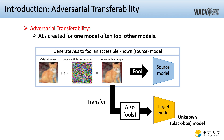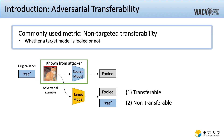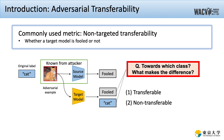AEs have transferability, which means that AEs created for one model can often fool other models. This nature significantly increases the risk of being attacked. Most commonly, the transferability has been evaluated by whether the AE fooled not only the source model but also the target model. However, it is not understood towards which class AEs fooled models, and what the mechanisms are.